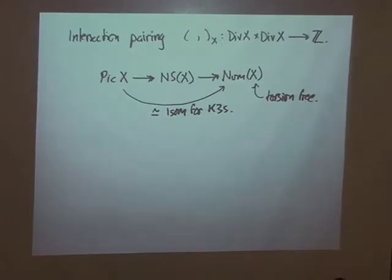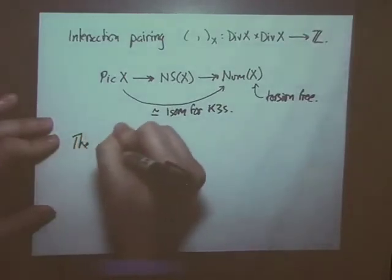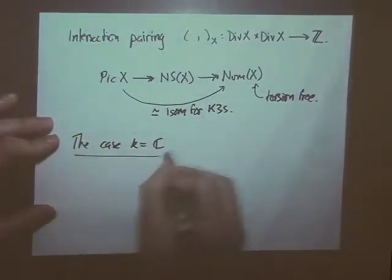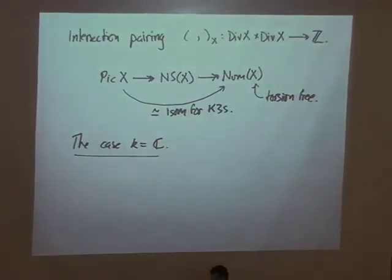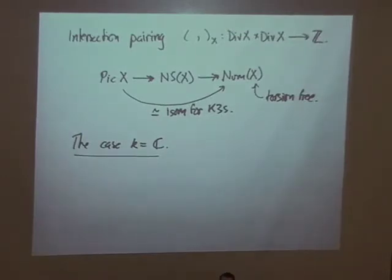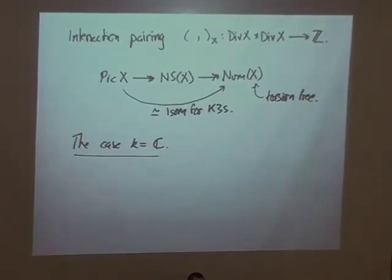I want to specialize to the case where the ground field is the complex numbers. Why? Well, number fields can be embedded into the complex numbers, so even if I'm interested in K3 surfaces over number fields, I can base extend to the complex numbers and things like singular cohomology become available. We can start studying a little bit of the algebraic topology of these surfaces. We also study a little bit of differential geometry, and they actually help a lot in telling us what's going on with the arithmetic.